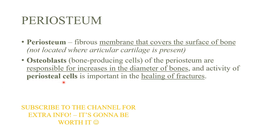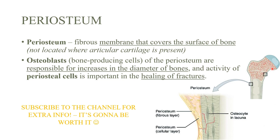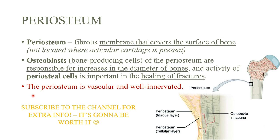The activity of osteoblast cells is very important for healing fractures or breaks in the bone. The periosteum covers the bone surface where there is no articular cartilage. It has two layers: a fibrous layer made of fiber, and a cellular layer. Both layers are very important.